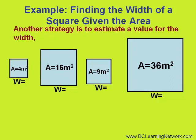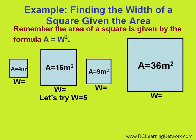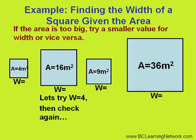Another strategy you could use is to estimate a value for the width and then square it to see if you come up with the area. In the second square, for example, let's try a width of 5 and see if we get the correct area. We would square 5, which means 5 times 5, and get an answer of 25, which we can see is too large. If the area turns out to be too large, like it was in this case, then the next guess we would try a smaller value for the width. If the area turned out to be too small, then we would have tried a larger value.